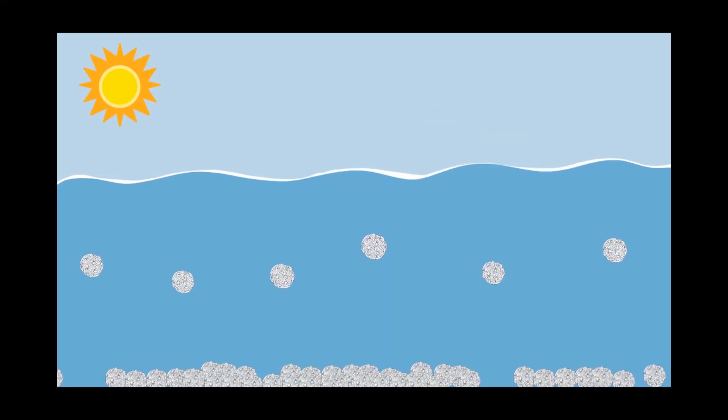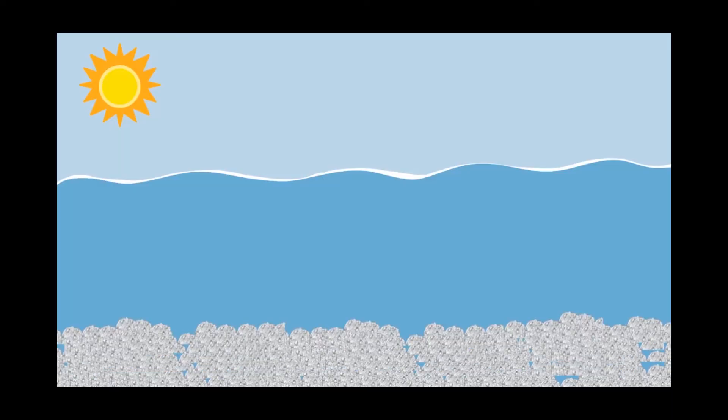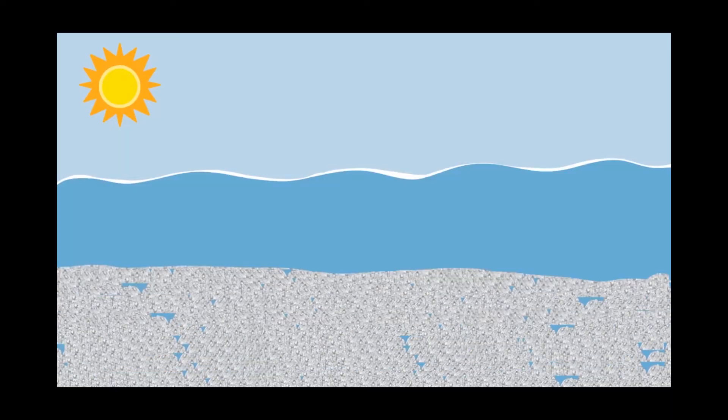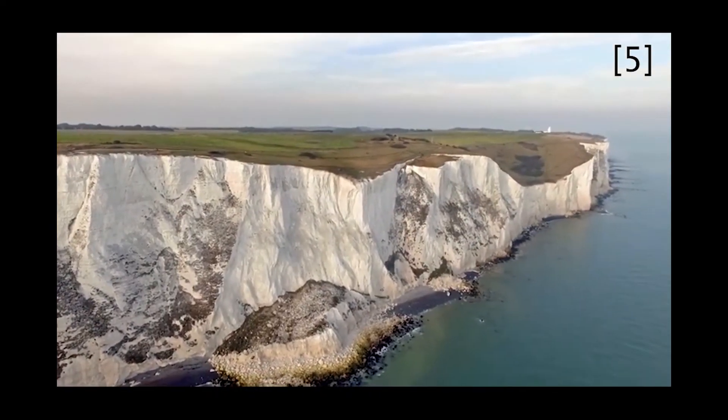When a coccolithophore completes its life cycle, it sinks to the bottom of the ocean. Even though they are so small, when there are a lot of them, they can build up to massive things.